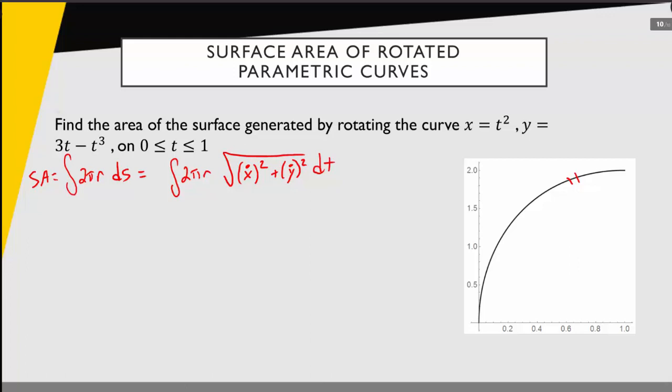Now the next thing we have to do is, now that we have this expression in terms of t as a function of t, we have to figure out how to get r as a function of t, and that's going to depend on which axis we're rotating about.